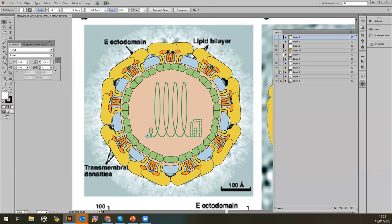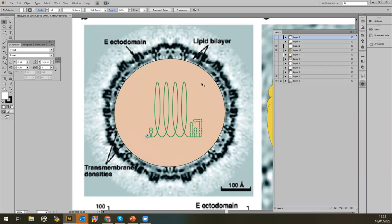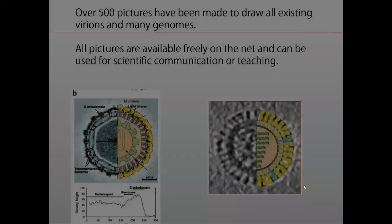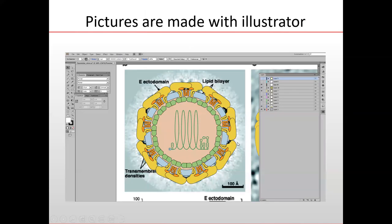I'm using Illustrator. I can show you there. For example, this is the flavivirus—it's vectorial pictures and you see, I'm drawing with some real pictures of cryo-EM and trying to make virions as much realistic as possible. So these are schemes, but trying to be realistic in terms of proteins, membranes, and capsids.